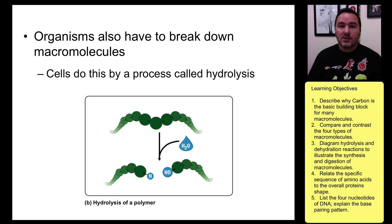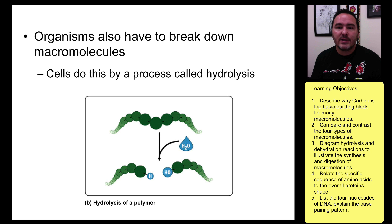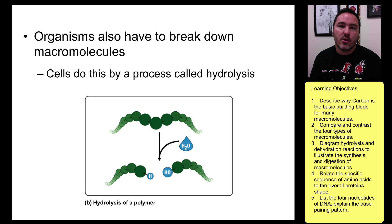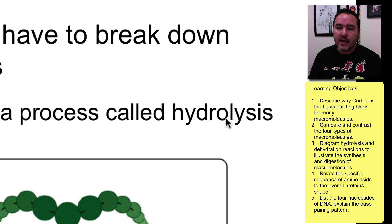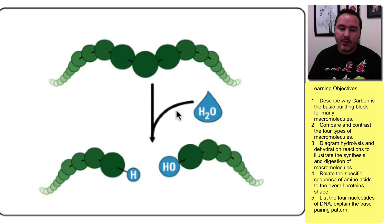Organisms also have to break down macromolecules. You eat food, it goes into your gut, and eventually it needs to be broken down by the cells so that your mitochondria can take advantage of the glucose and make energy. The process that does this is called hydrolysis. Hydro means to add water, lysis means to break apart — so you add water and you break apart.